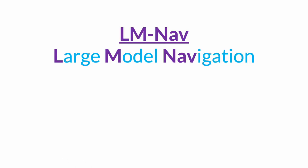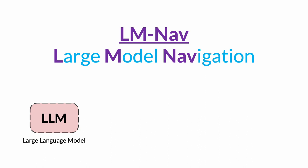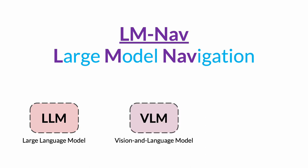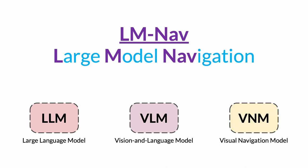Our system, coined LMNav, or Large Model Navigation, comprises three large pre-trained models: a large language model that can parse and translate text but has no sense of visual grounding; a vision and language model that can ground images and text but has no context of embodiment; and lastly, a visual navigation model that can control the robot from visual observations.